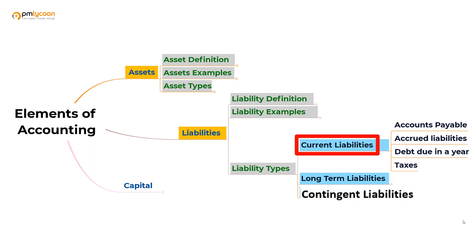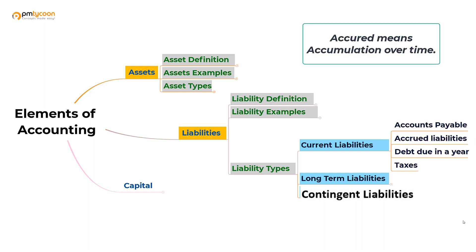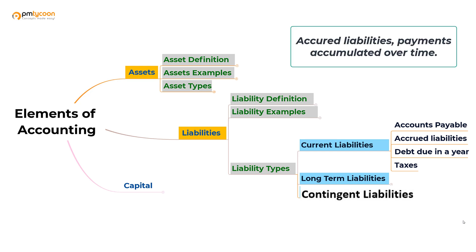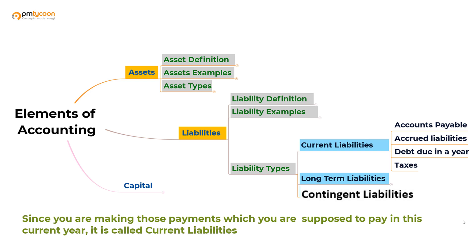We have not yet discussed accrued liabilities, so let me explain. The word 'accrued' means accumulation over time. Accrued liabilities are payments that have been accumulated over a period of time, which were not paid previously and are to be paid within the current year. Since you're making those payments within the current year, it is called a current liability.